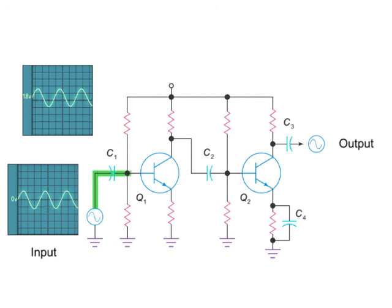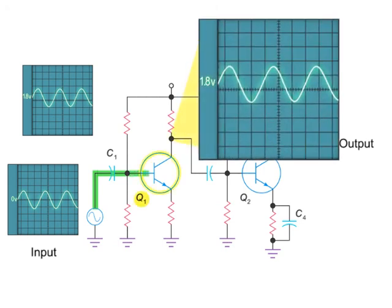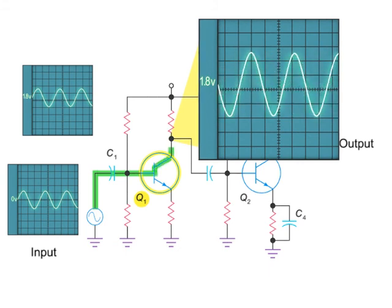The signal next passes through the first transistor, Q1. This process produces a larger and inverted AC signal at the collector and also adds a DC voltage of 5 volts.